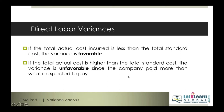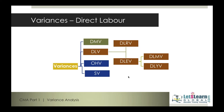In this session, we'll discuss direct labor variances classified into direct labor rate variance and direct labor efficiency variance. You can take the direct labor rate variance as just a replica of direct material price variance. Likewise, direct labor efficiency variance is a replica of direct material quantity variance (usage variance). Direct material mix variance in the case of labor becomes direct labor mix variance.